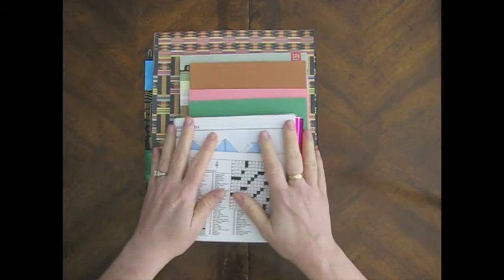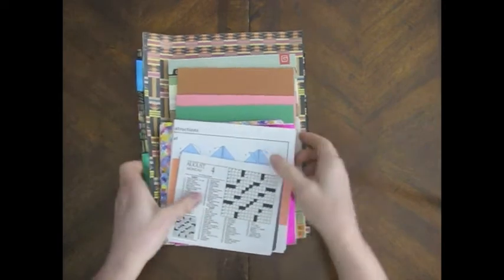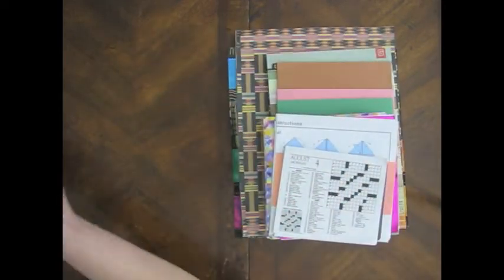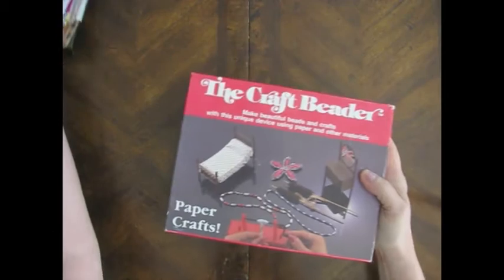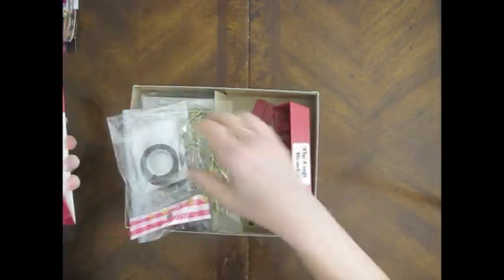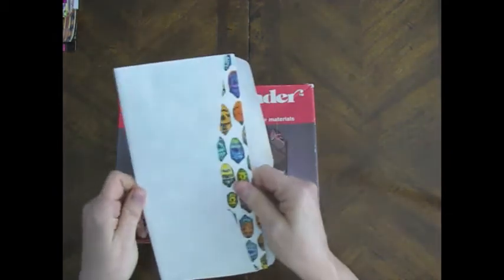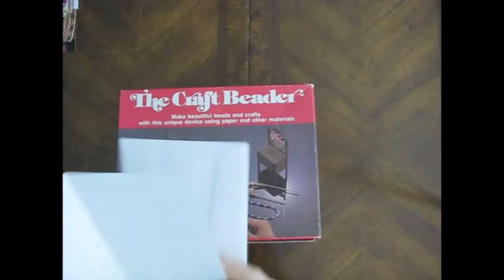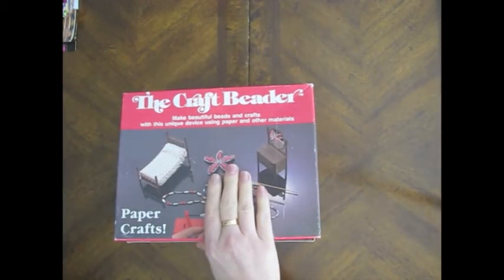She sent a bunch of paper and in the box was this craft bead roller tool thing. And she has a note. She wrote a note about it. Look at those gorgeous beetles. She was talking about how she found this old bead roller thing, and it works great.